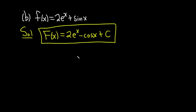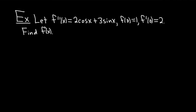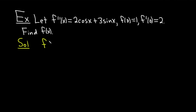Let's do a problem that is a little more challenging. Let f double prime of x equal 2 cosine x plus 3 sine x, with f of 0 equal to 1 and f prime of 0 equal to 2. We're going to find f of x. To do this problem we'll do it in steps. Step one: antidifferentiate the second derivative to get the first derivative, f prime of x.